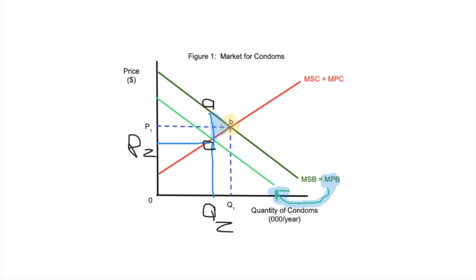Triangle ABC represents the potential welfare gain of some government program to increase the use of condoms. If you go into a university health clinic in the US, they often give condoms away — because they know students are going to have sexual interactions and condoms are underused. The goal is to shift the marginal private benefit outward, closing the gap between Q2 and Q1.